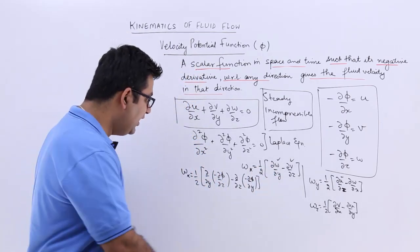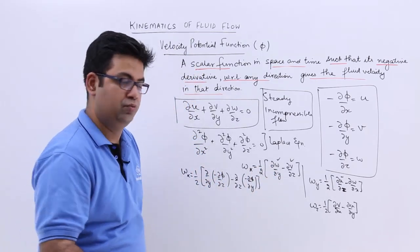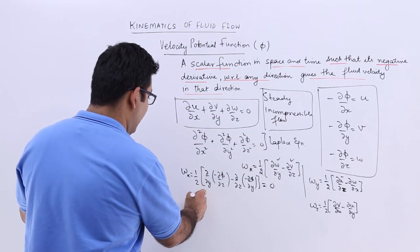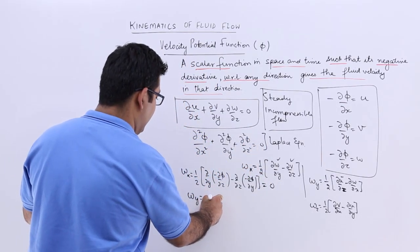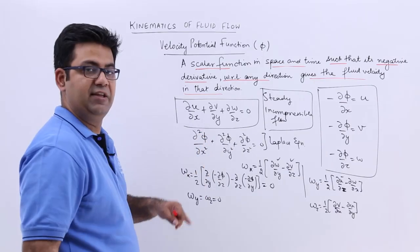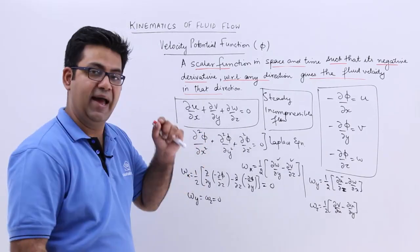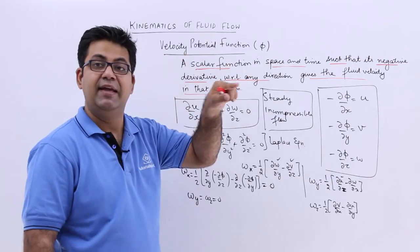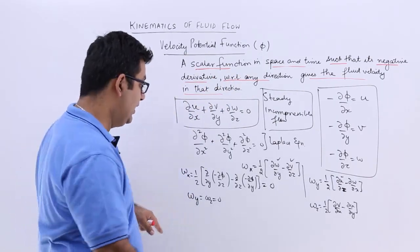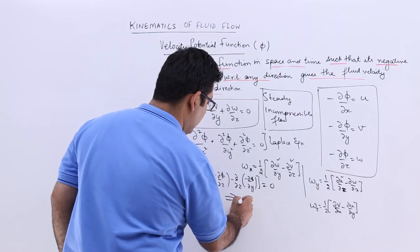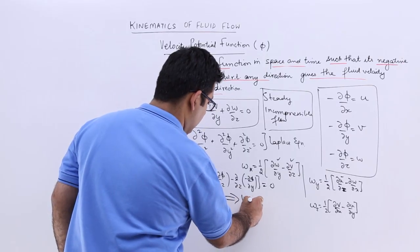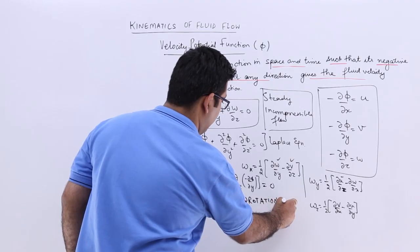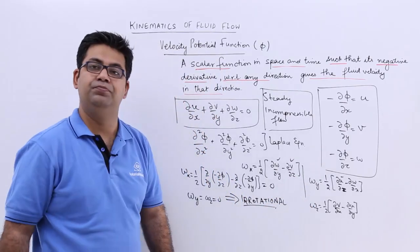Omega x equals zero, and so will be the values for omega y and omega z. This means that if a velocity potential function exists, the flow has to be irrotational — irrotational meaning there is no rotational velocity in the flow.